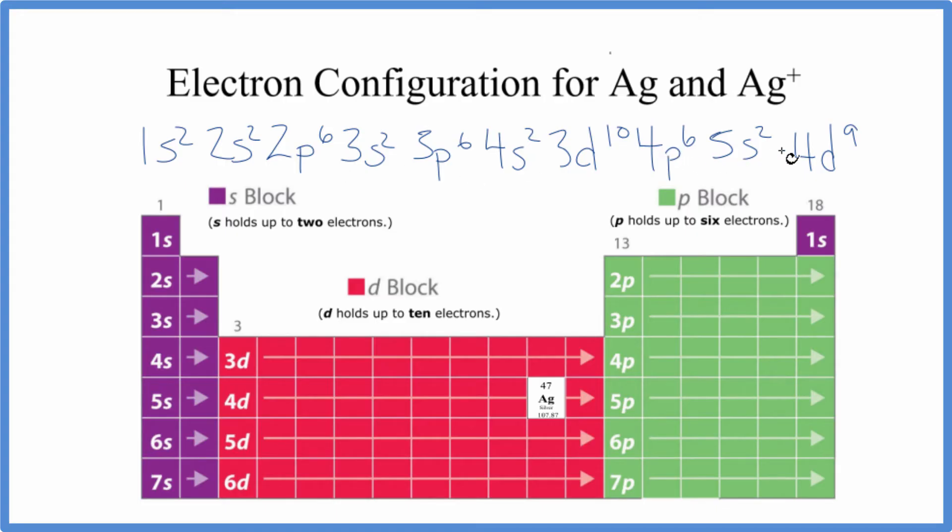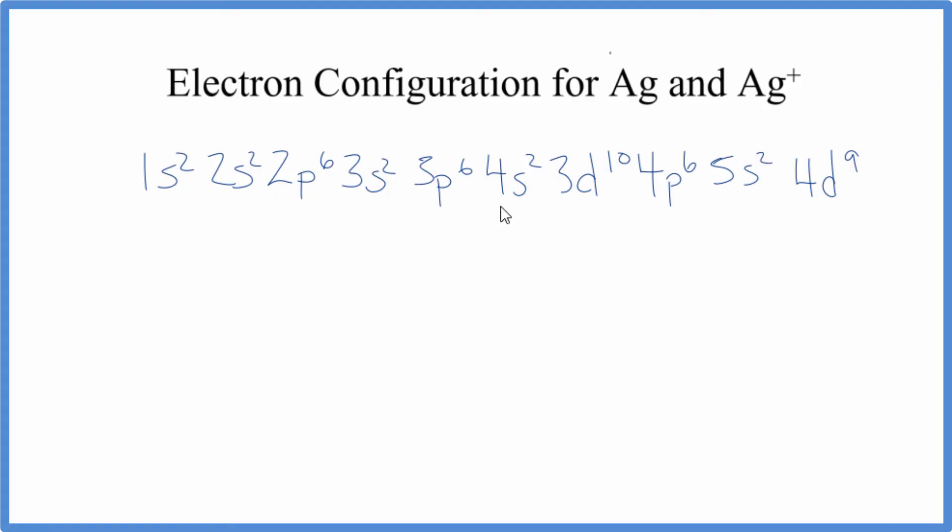Let's write the correct electron configuration for silver, and then it'll be easy to do it for the silver ion. The first thing we need to correct is, with transition metals, those d-block elements, the 3d is written before the 4s. So we'll replace that.